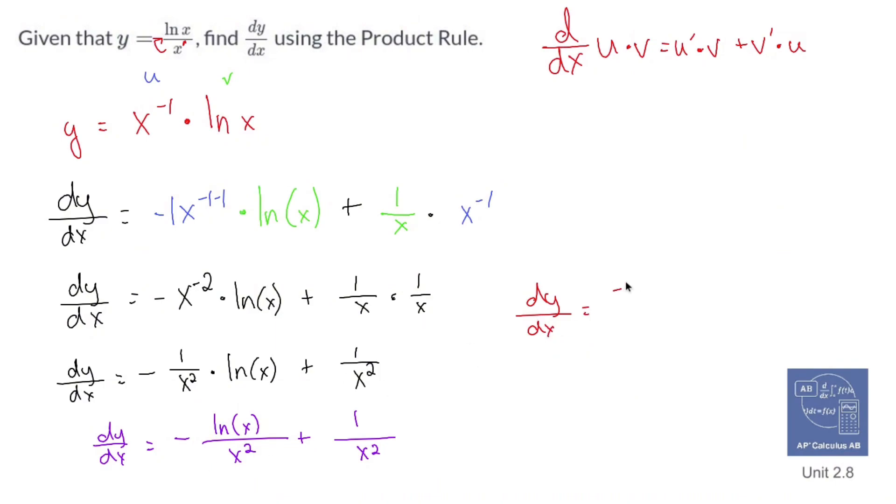So dy/dx is going to equal negative ln of x plus one, all over x squared. Not the prettiest looking guy on the planet, but that's all right - it's not all about beauty. The beauty is on the inside that counts. Thanks for watching, like and subscribe.